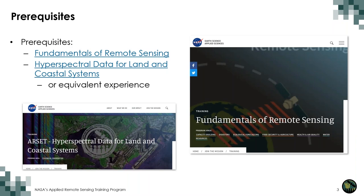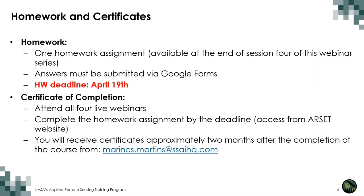There are two prerequisites for this training: an understanding of the basics of remote sensing and hyperspectral data for land and coastal systems. We have our courses on those concepts listed here. For this series, we will have one homework assignment. The link to the homework will be made available during our last session and will be due on Wednesday, April 19th. The homework will be a Google form that you submit online, and if you attend all the sessions and complete the homework by the deadline, you will receive a certificate of completion, but please be patient as it takes a couple months to process and send out all these certificates.